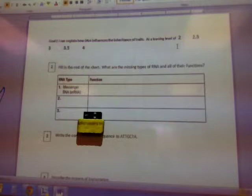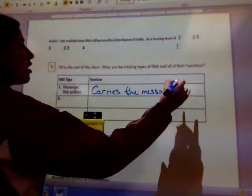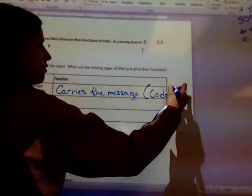Alright, chapter 8 review. First thing, goal number 2. Messenger RNA. The function of messenger RNA is in its name. It carries the message. And another name for messenger RNA or what is embedded within it would be the codon.